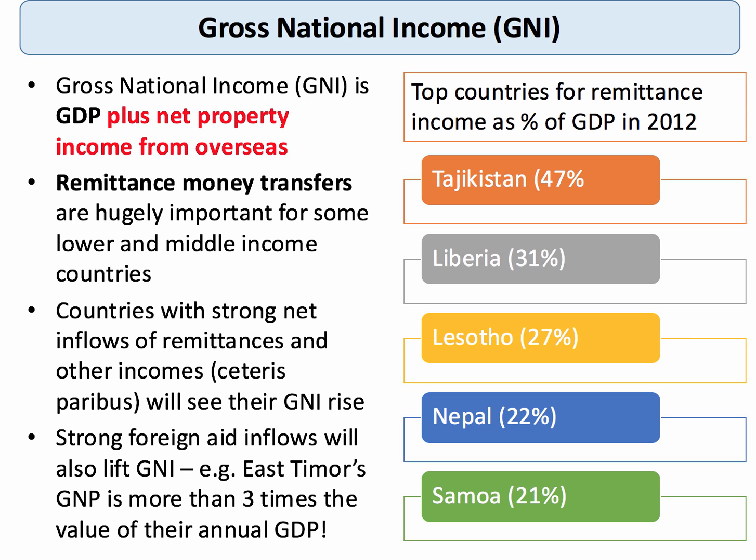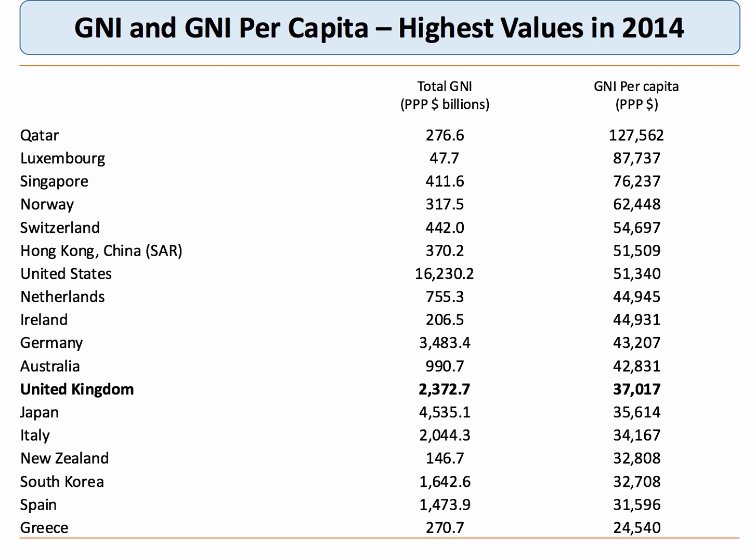So GNI is GDP plus net external income. These are the countries in the world with the highest GNI per capita. Qatar, Luxembourg and Singapore are well out ahead, with Norway in fourth place. There's the UK with a GNI per capita — purchasing power parity adjusted — of just over $37,000.